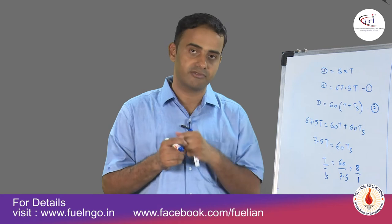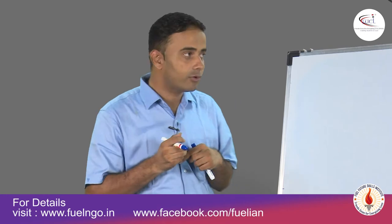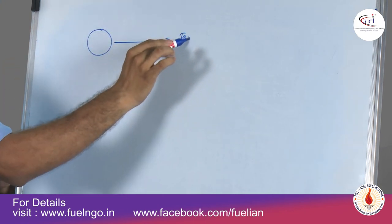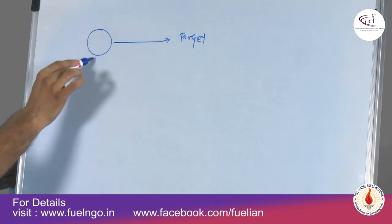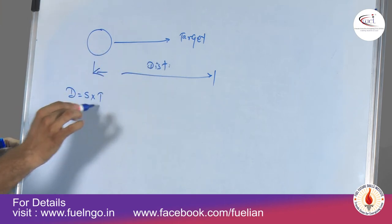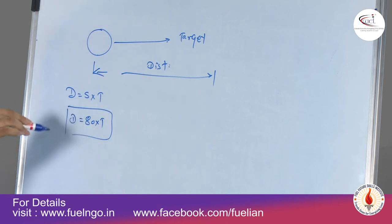Distance is constant in this example too. The next problem: an arrow shot at 80 meters per second hits the target 2 seconds sooner if the wind is moving at 20 meters per second. From source to target, distance is constant, so distance equals speed × time. Initially, speed is 80 m/s and time taken is T seconds.